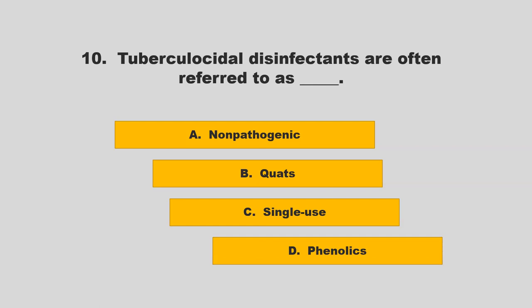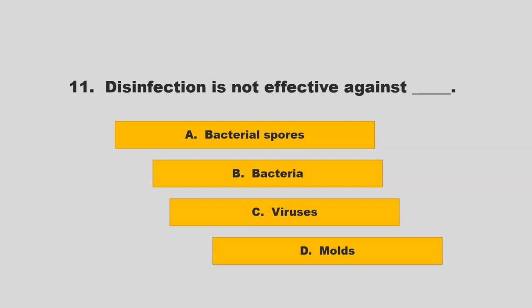Tuberculocidal disinfectants are often referred to as blank. Options: non-pathogenic, quats, single-use, or phenolics. The correct answer is D: phenolics. Disinfection is not effective against blank.